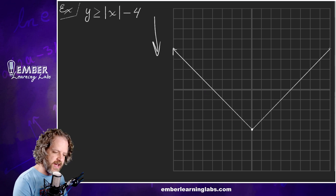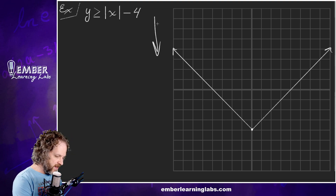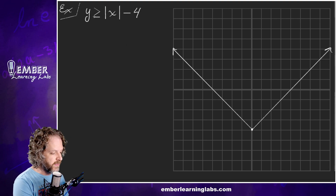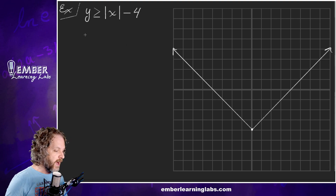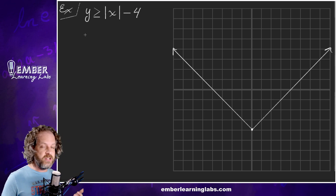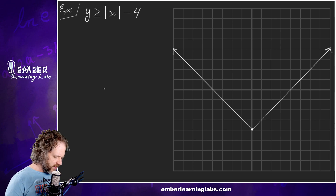So it's just the parent shifted down. Now, is this supposed to be a solid line or a dashed line? It's supposed to be a solid line — we know that because of the 'equal to' part. Now I'm going to change this example to a less than, so that you have two different ideas in your notes to better remember what's going on.